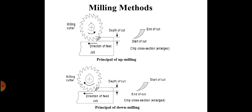Another difference: in up milling, more holding devices are required, whereas in down milling optimum holding devices are required. This concludes the differences between up milling and down milling.